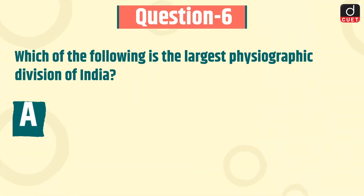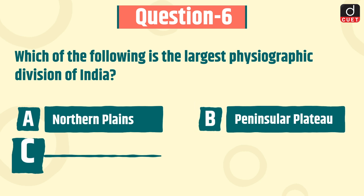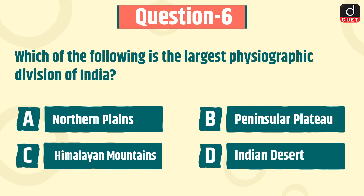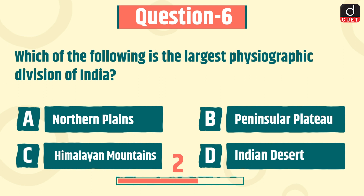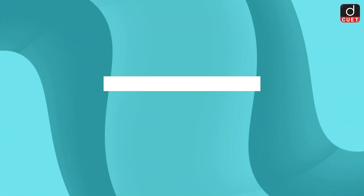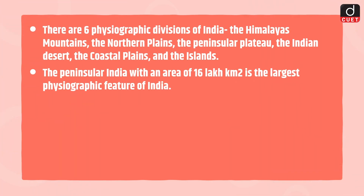The next question is: which of the following is the largest physiographic division of India? Northern Plains, Peninsular Plateau, Himalayan Mountains, or Indian Desert? The correct answer is option B, Peninsular Plateau. There are six physiographic divisions of India: the Himalayan Mountains, the Northern Plains, the Peninsular Plateau, the Indian Desert, the Coastal Plains, and the Islands. The Peninsular Plateau, with an area of 16 lakh square kilometers, is the largest physiographic feature of India.